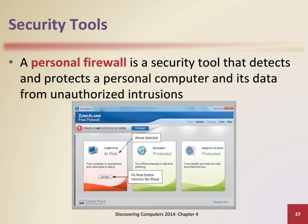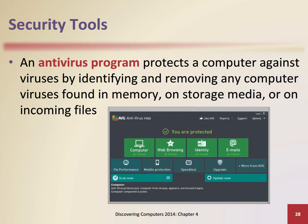A personal firewall utility protects personal computers and data from unauthorized intrusions by monitoring transmissions to and from the computer and informing the user of any attempted intrusion. Antivirus programs protect computers against viruses by identifying and removing them, and most also protect against worms and Trojan horses. One technique antivirus programs use is to look for virus signatures — a known specific pattern of virus code. Computer users should update their antivirus program signature files regularly.